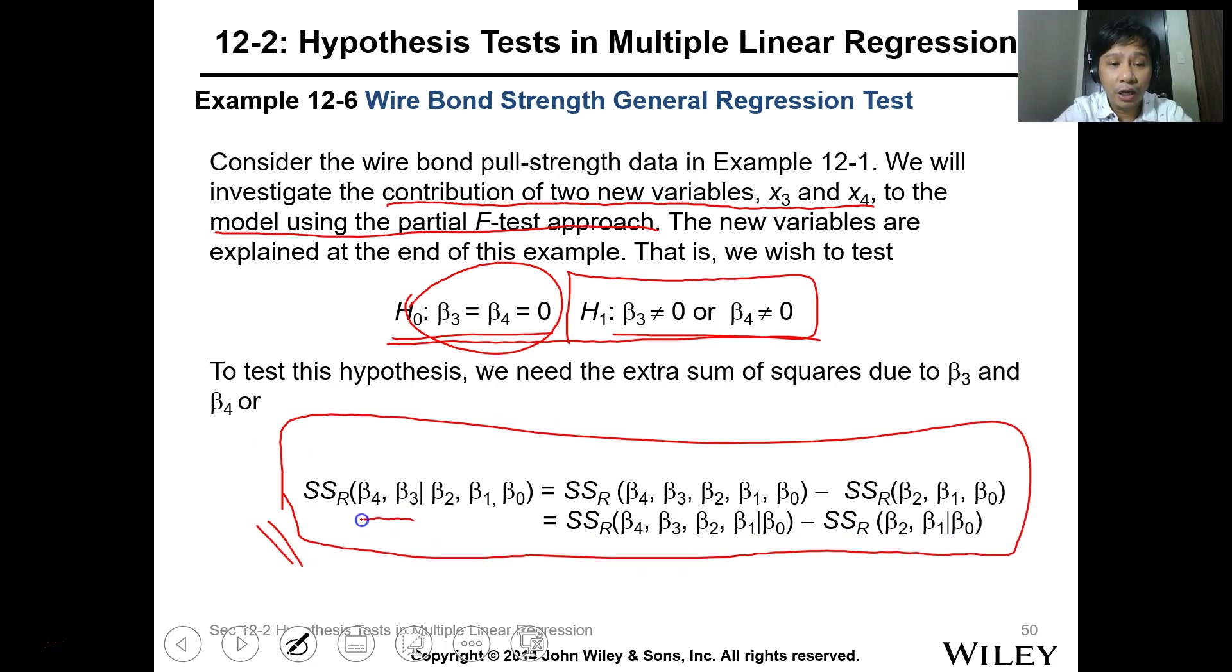So SSR for β3, β4, or β0 given that β2, β1, β0 is already known. So this is how you compute it. You can get the SSR for all the data minus the SSR of the previous data.